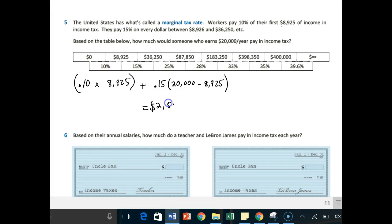I'll be paying $2,533.75. So my take-home pay after taxes is going to be my original salary, $20,000, minus my taxes, $2,533.75. That means after taxes, I take home $17,466, not too bad.